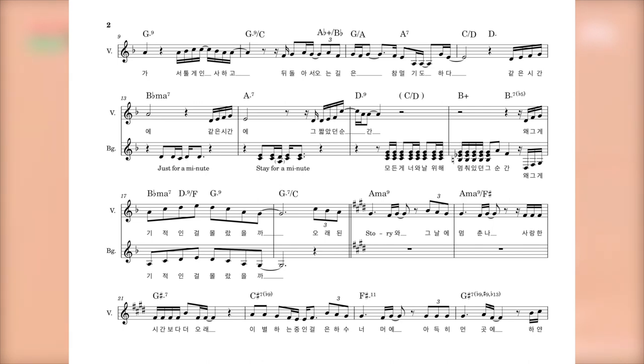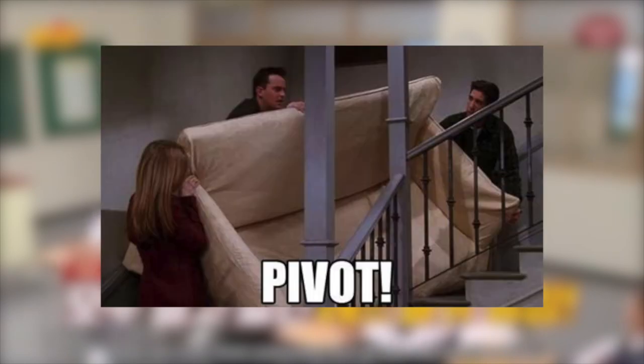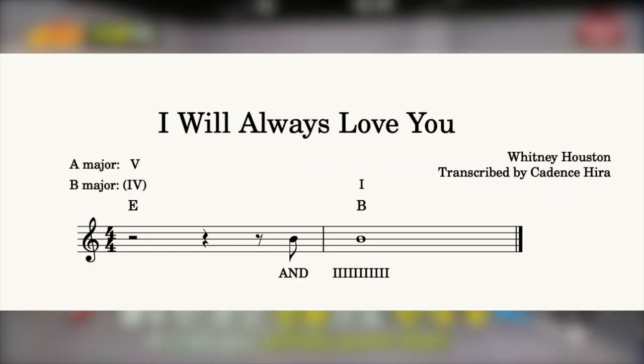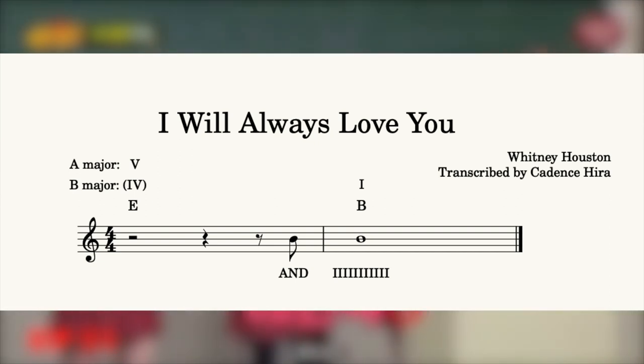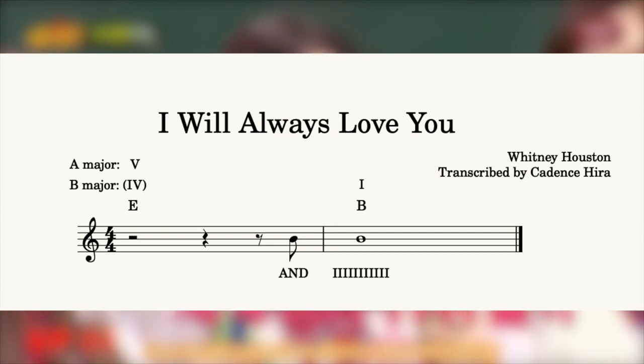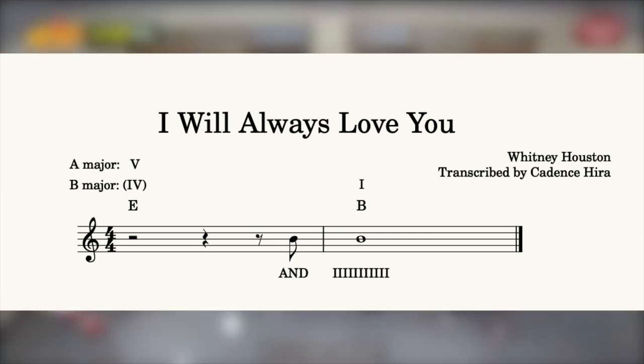Before we discuss this, we need to talk about modulation. There are a few common ways to change keys. Objectively speaking, the cleanest or smoothest way to modulate is by using a pivot chord. Pivot chords are chords which function in two different keys, and quite literally pivot between the two. This technique was especially common in classical music, but it's also appeared in modern tunes, such as the modulation in Whitney Houston's I Will Always Love You. The last chord in the bridge, E major, functions as the V in the original key of A, but becomes recontextualized as the IV of the new key, B major. We'll talk more about pivot chords later in the video.